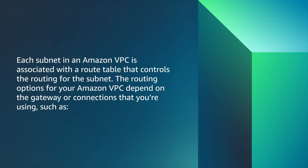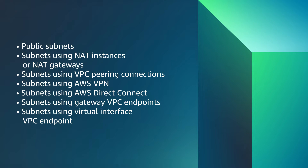Each subnet in an Amazon VPC is associated with a route table that controls the routing for the subnet. The routing options for your Amazon VPC depend on the gateway or connections that you're using, such as public subnets, subnets using NAT instances or NAT gateways, subnets using VPC peering connections, subnets using AWS VPN, subnets using AWS Direct Connect, subnets using Gateway VPC endpoints, and subnets using virtual interface VPC endpoints.